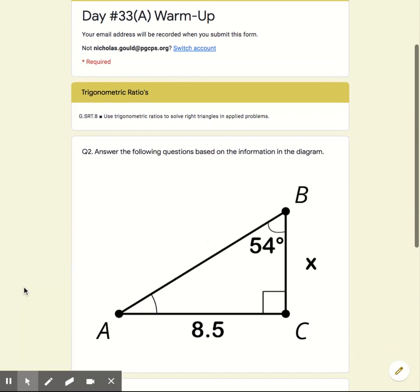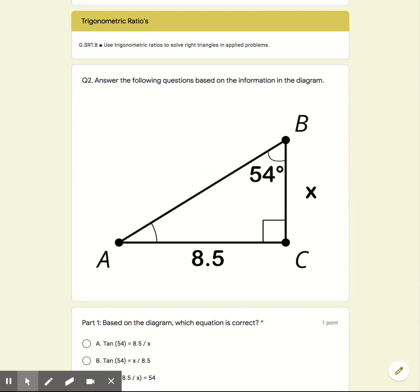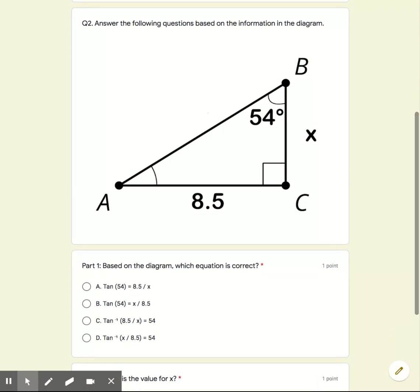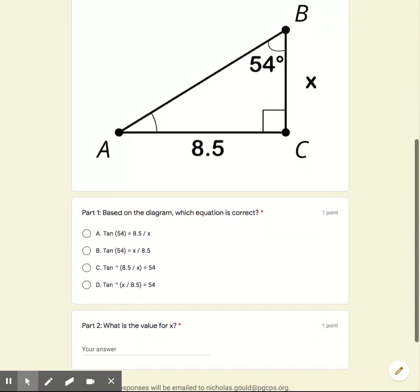All right, now when we get to the second question, it says again, answer the following based on the diagram information. And so now for this one, we go from a different angle. We go from angle B this time. We don't have any information on the hypotenuse. We only have information on the opposite and the adjacent. So now we understand that the only trig function that we have for opposite and adjacent will be the tangent function.